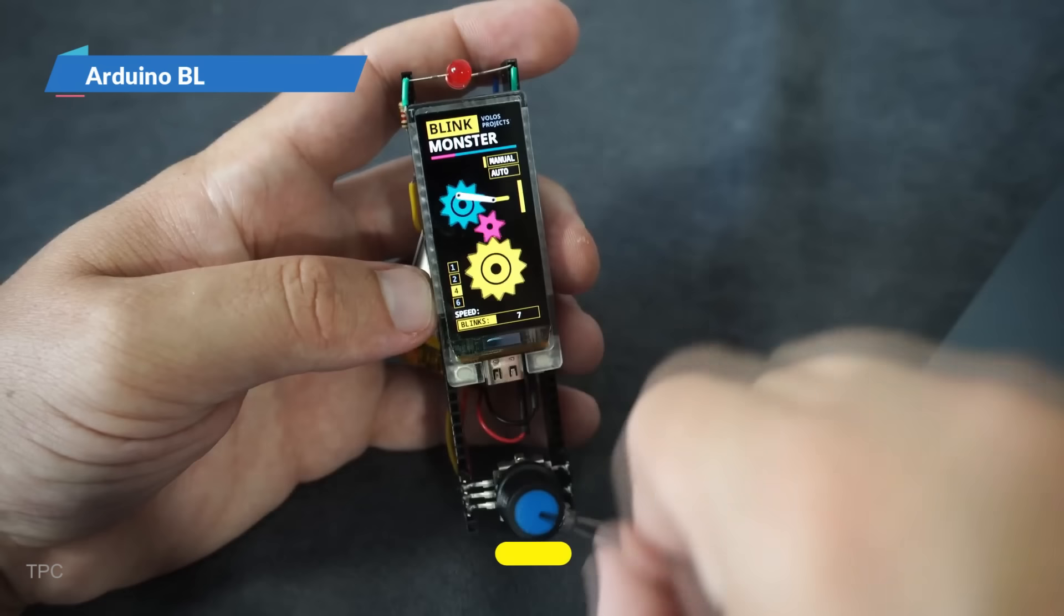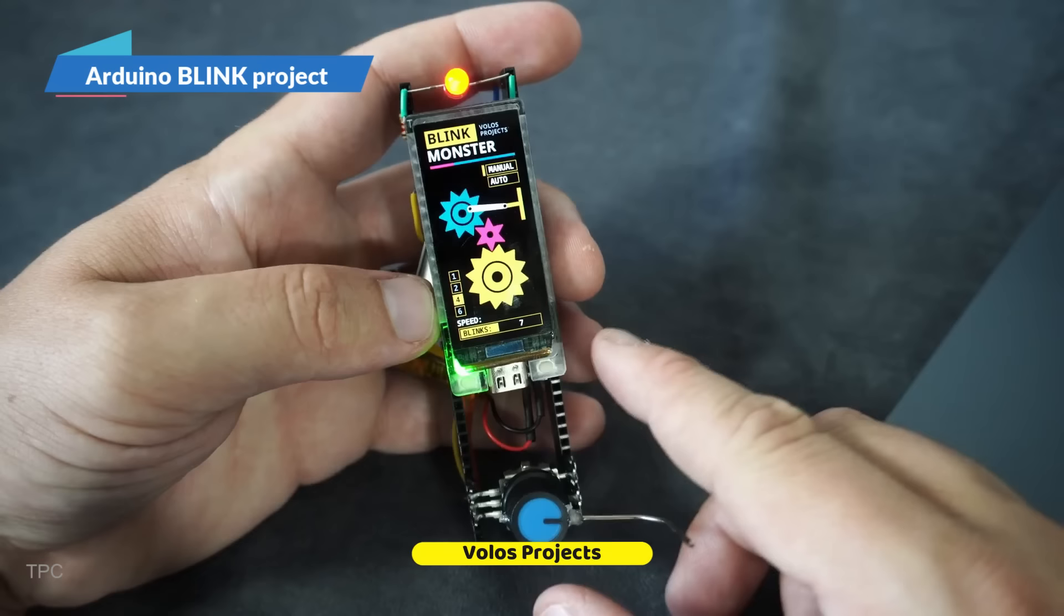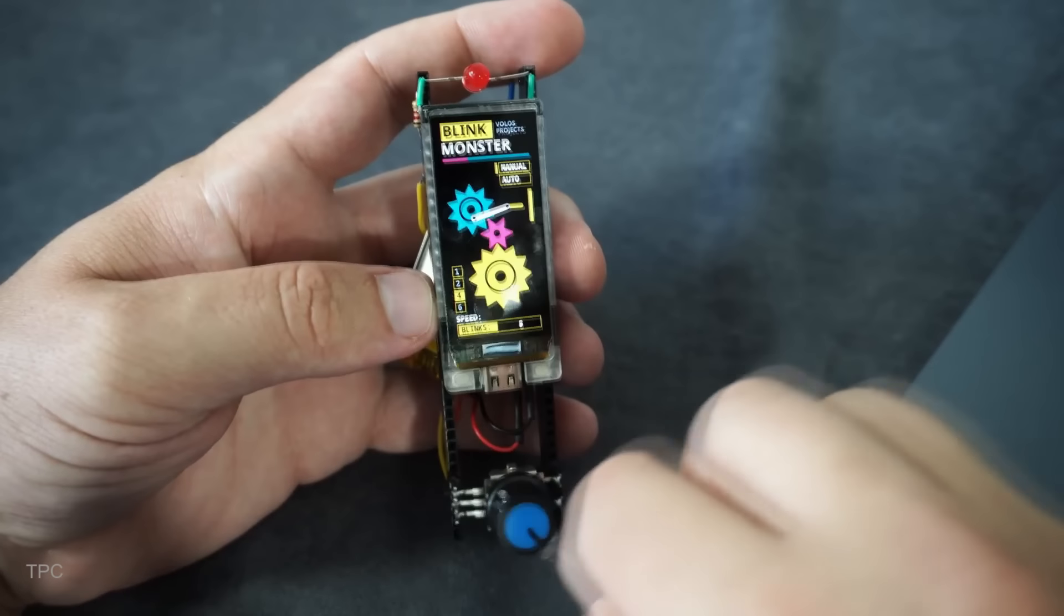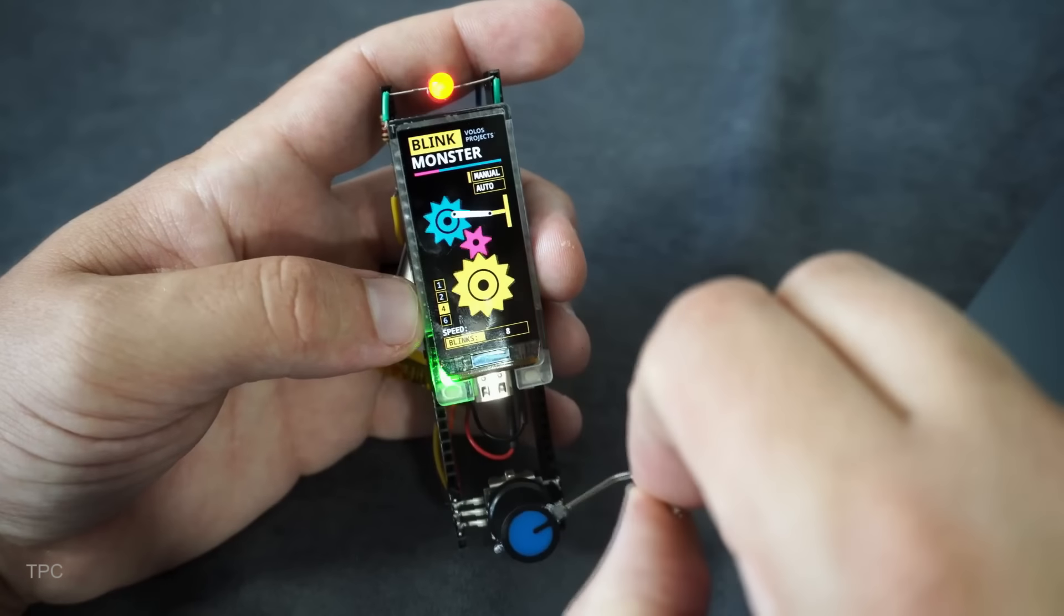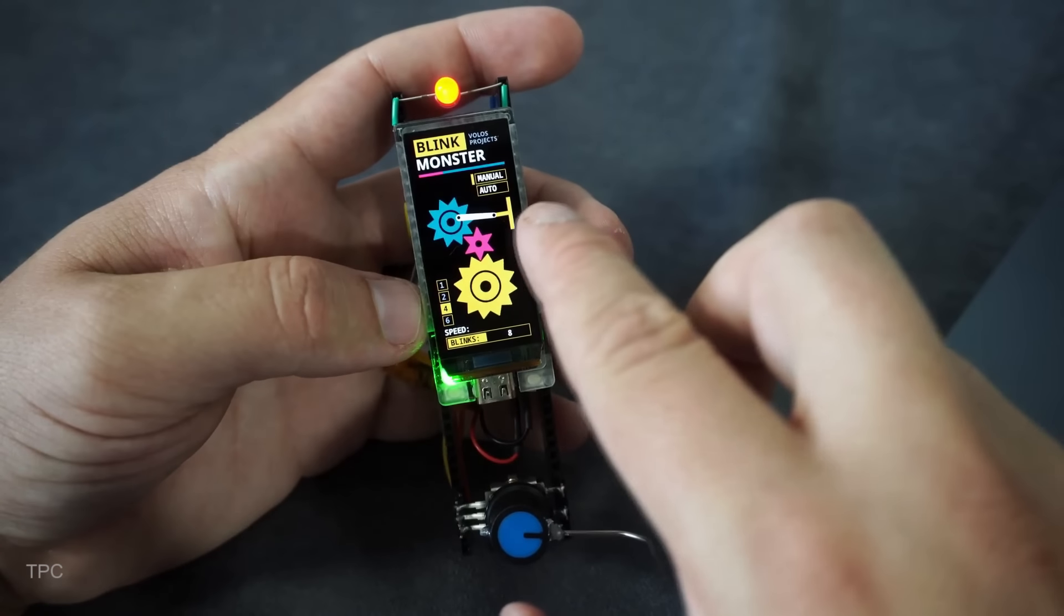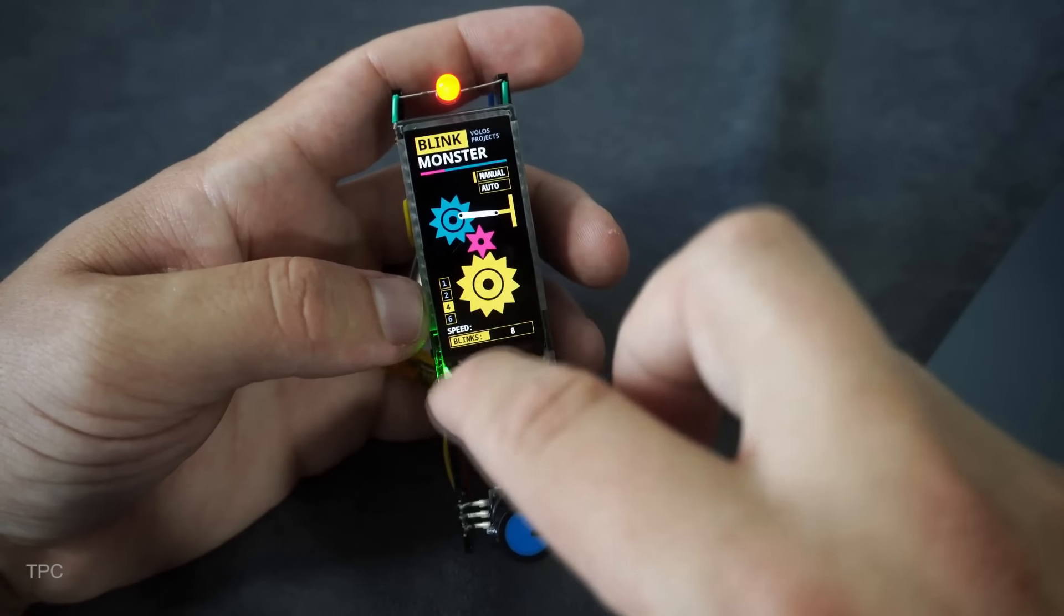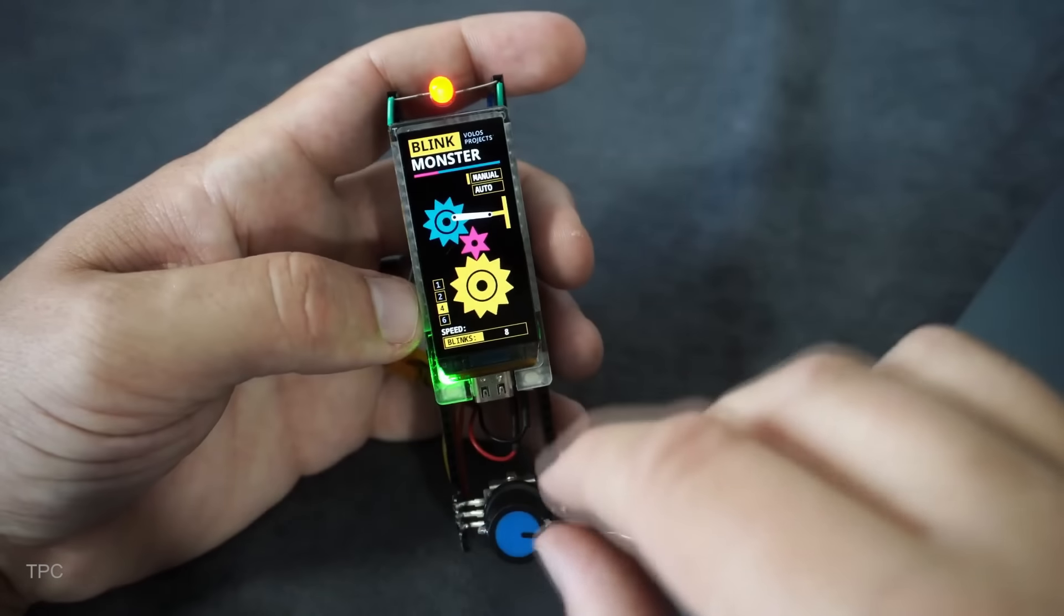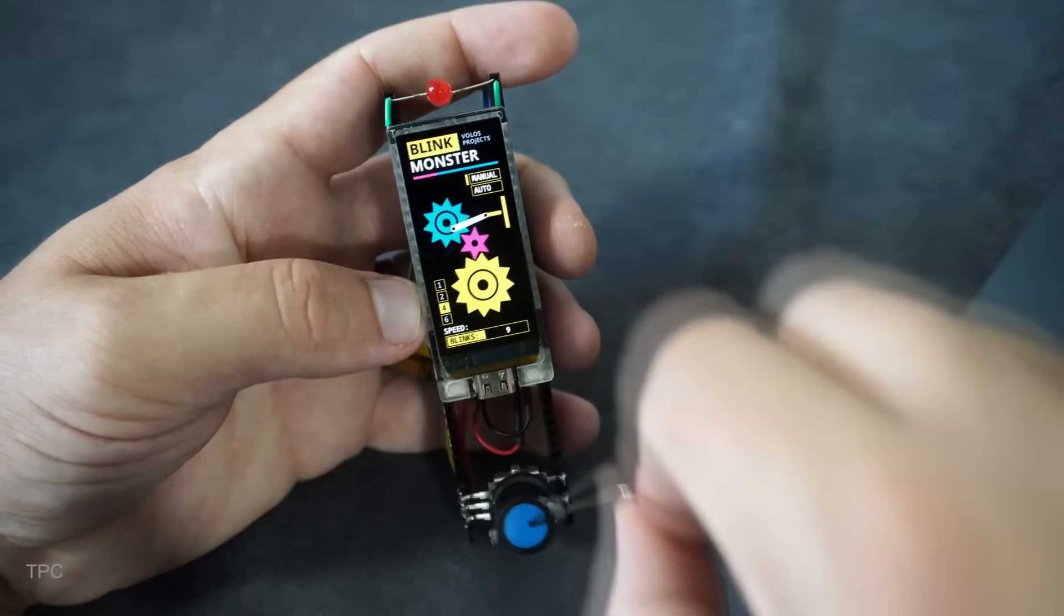Number 14. Volos created a unique way to blink two LEDs using a T-Display S3 AMOLED board. By combining basic shapes like circles, triangles, and lines, he crafted a lever that turns the LEDs on. These shapes are displayed precisely at the right moments and angles for perfect timing.